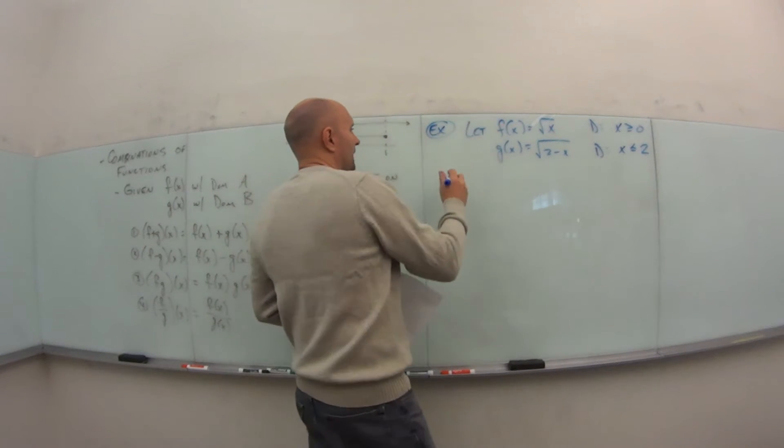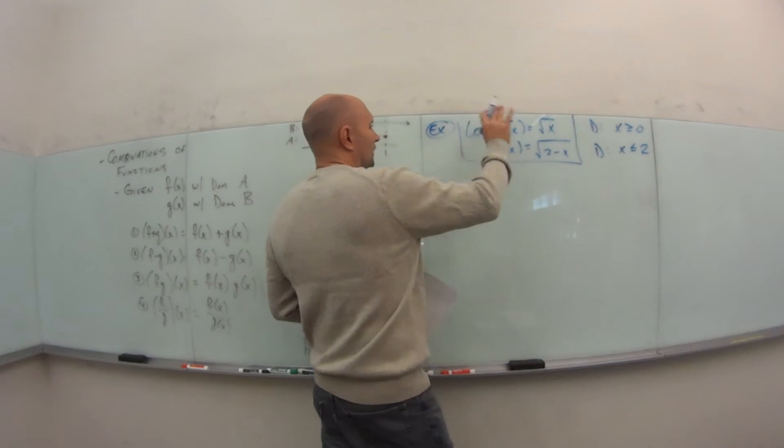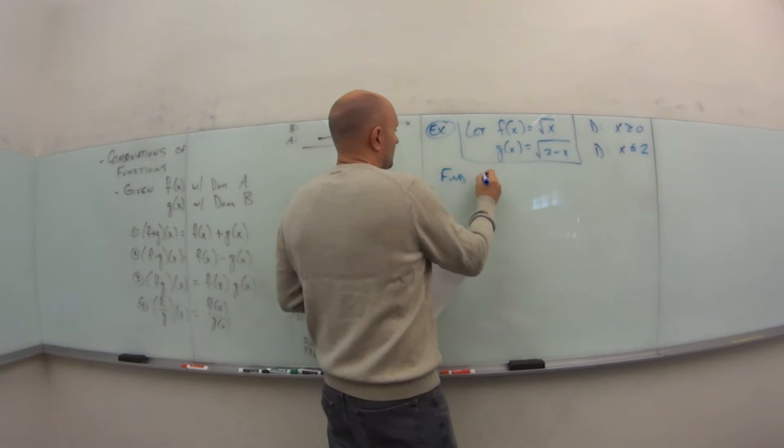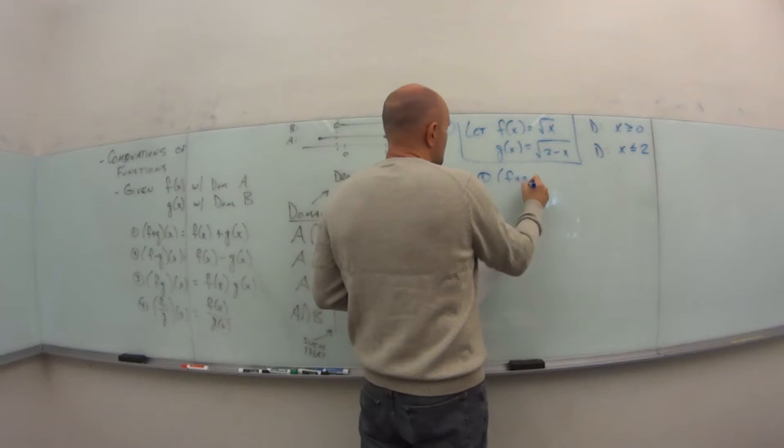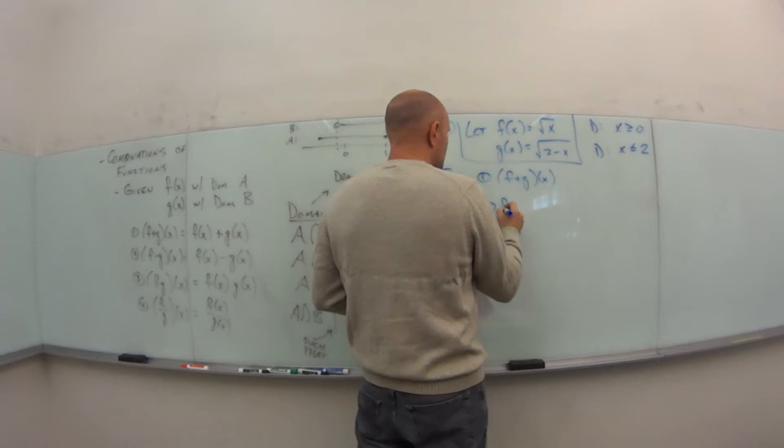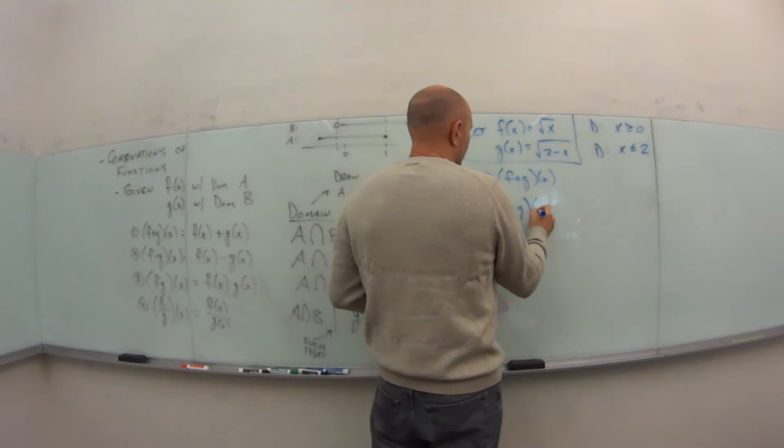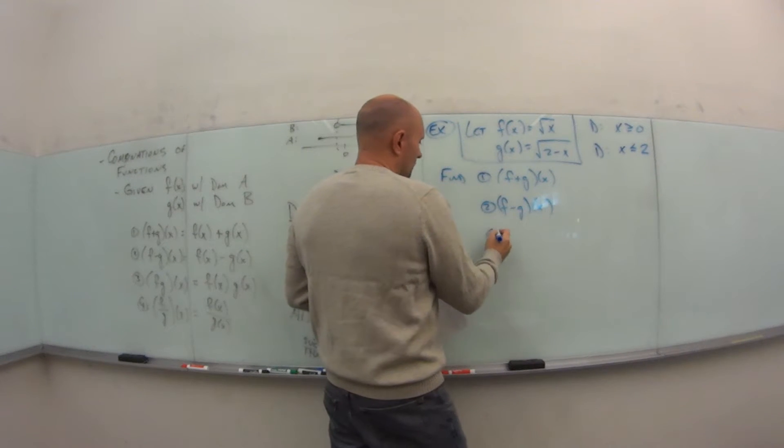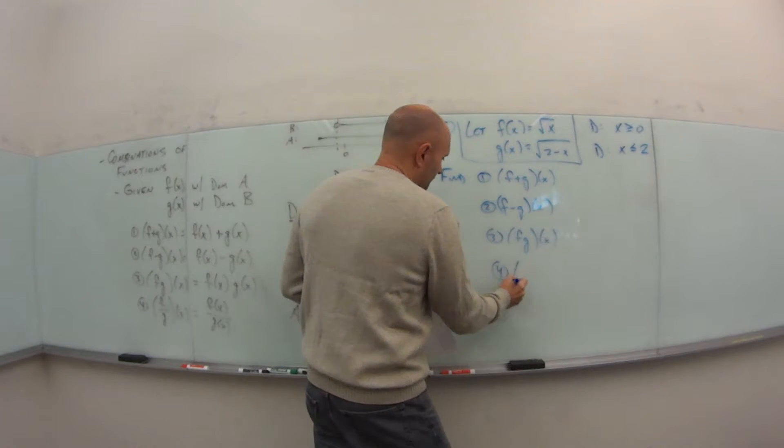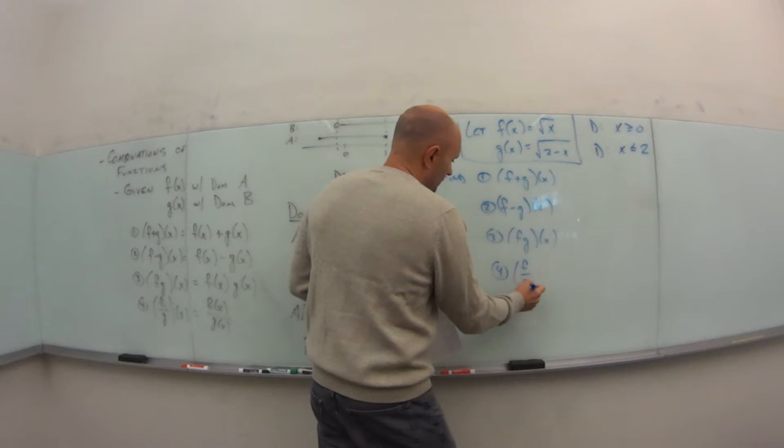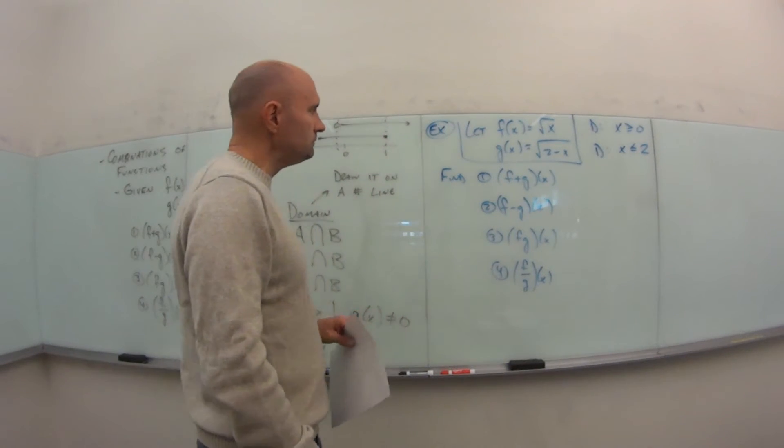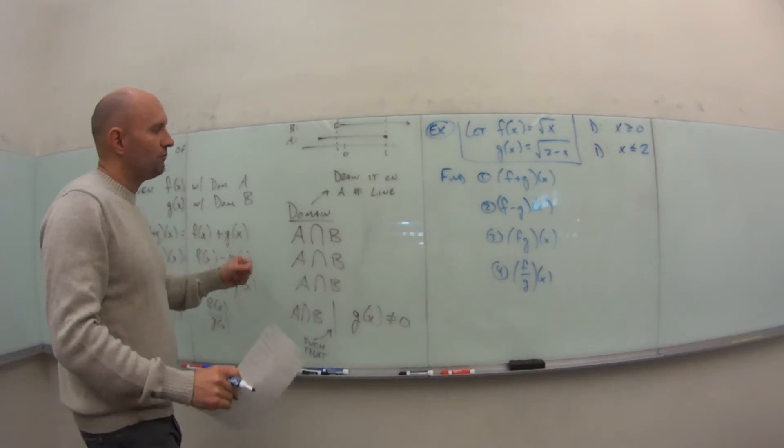Now we have that. So we were given this. We figured out the domain, because we're going to need that, because we want to find the following. We want to find f plus g of x, f minus g of x, f times g of x, and f divided by g of x. And find the domains.